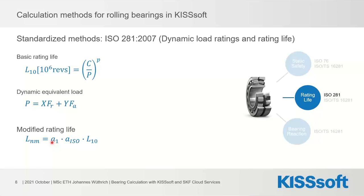The basic rating life refers to a 10% failure probability, but for some applications we might need 1% or even 0.1%, which can be taken into account with the a1 factor — reducing the rating life accordingly. The second factor accounts for the bearing's running conditions: lubrication, cleanliness of the environment, and fatigue limits. This requires a bit more calculation, but it is directly integrated in KISSsoft — you only need to enter the lubricant and environment conditions.